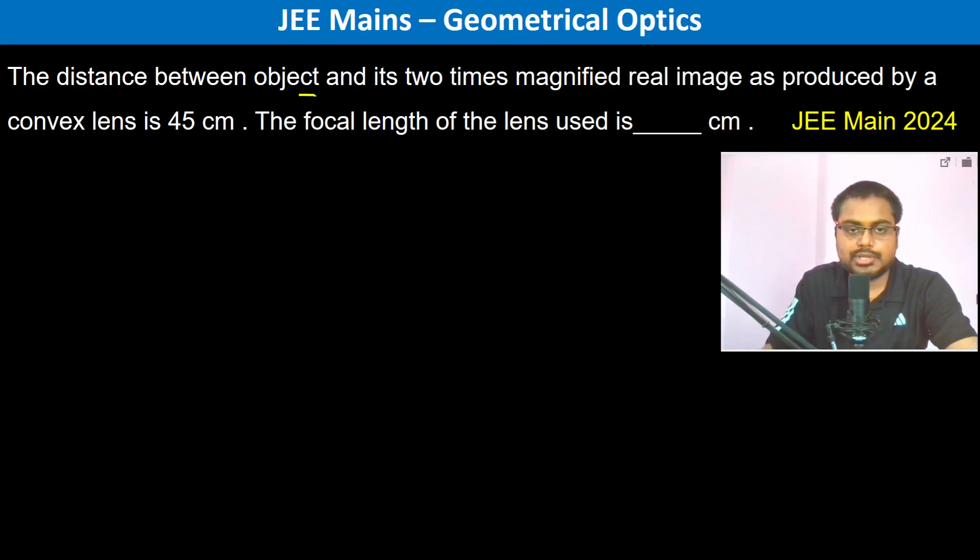The distance between object and its two times magnified real image as produced by a convex lens is 45 centimeters. The object is going to be here, the image is going to be real and inverted on the other side.